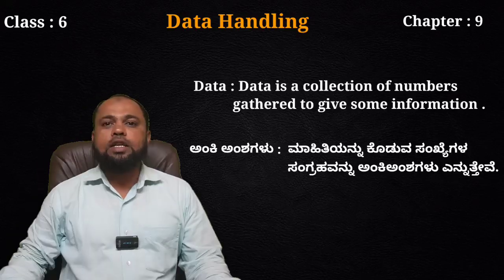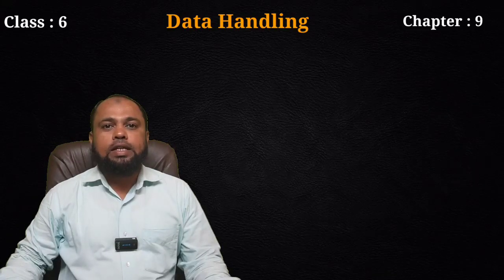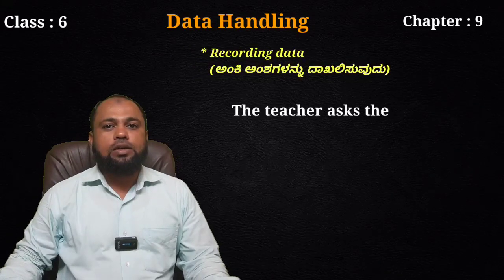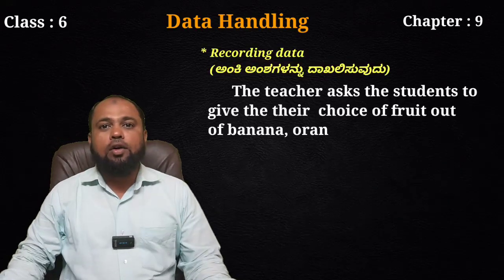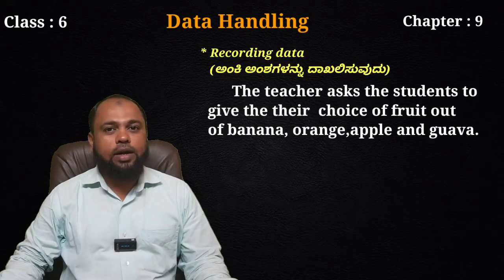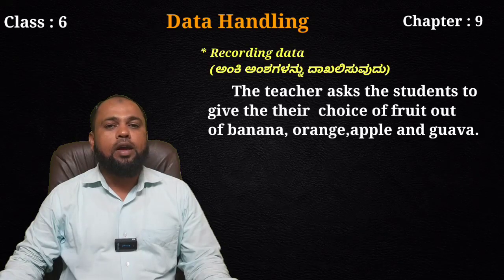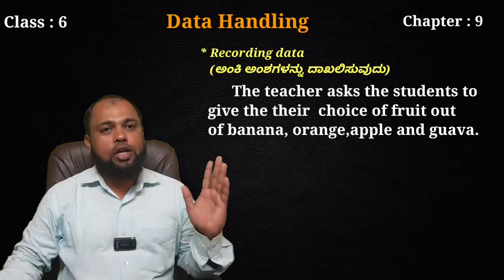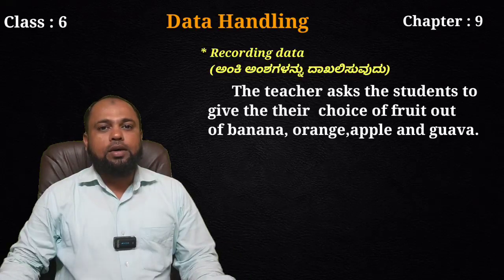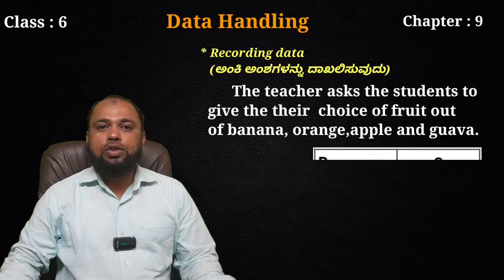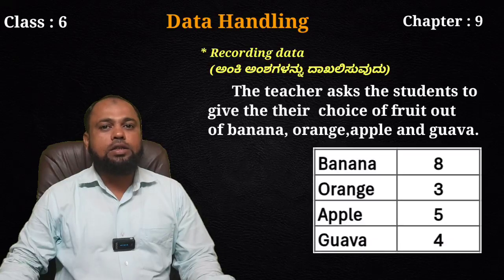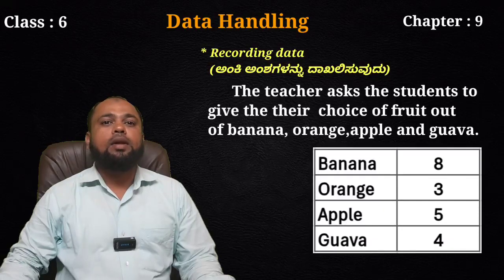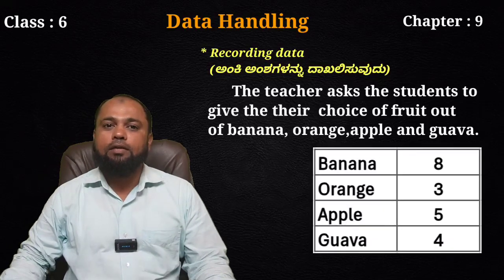For example, a class of 20 students — teachers ask them to choose a fruit of their choice out of banana, orange, apple, and guava. This is shown in a tabular column: 8 students chose banana, 3 chose orange, 5 chose apple, and 4 chose guava.